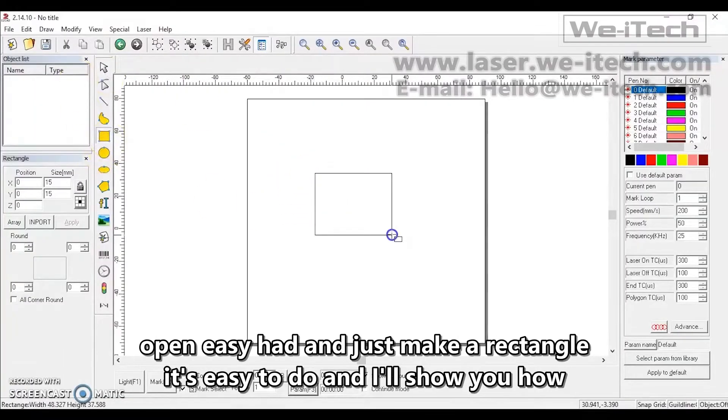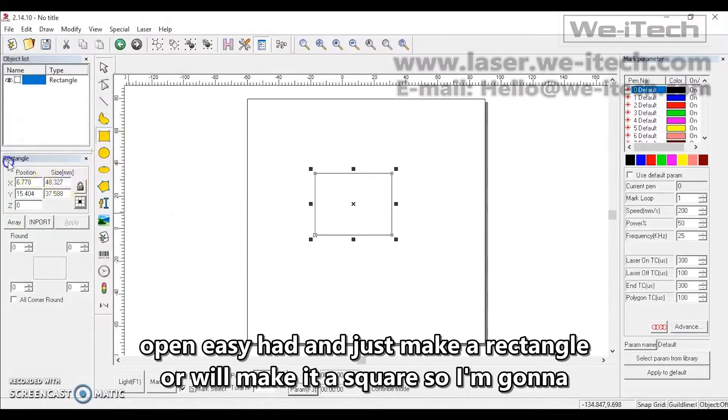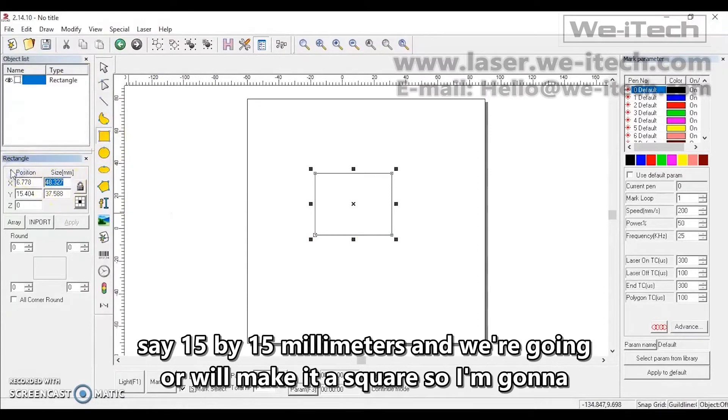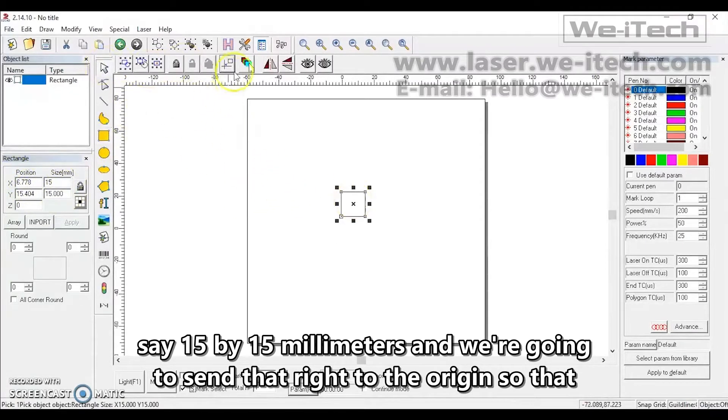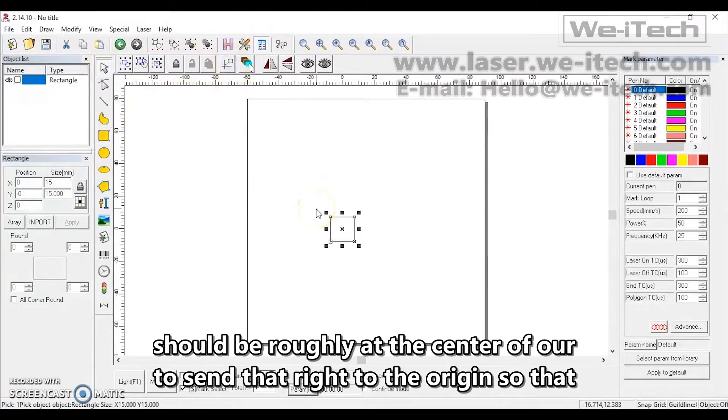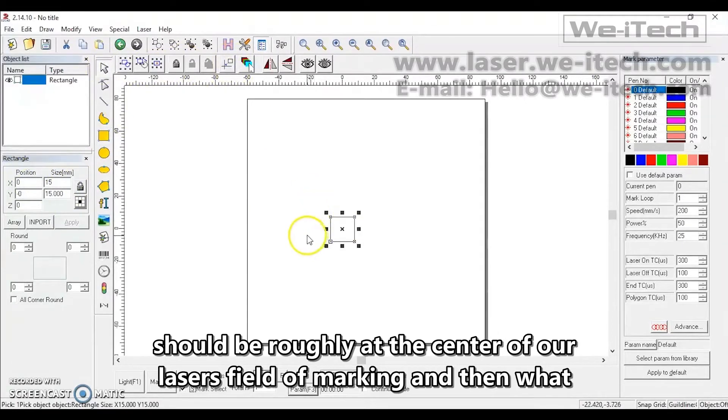Open EasyCAD and just make a rectangle, or we'll make it a square. So I'm going to say 15 by 15 millimeters, and we're going to send that right to the origin.